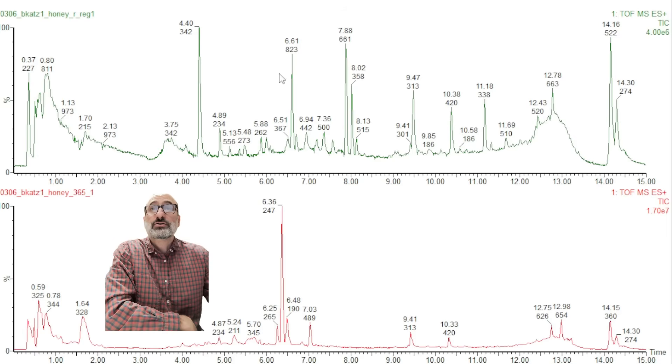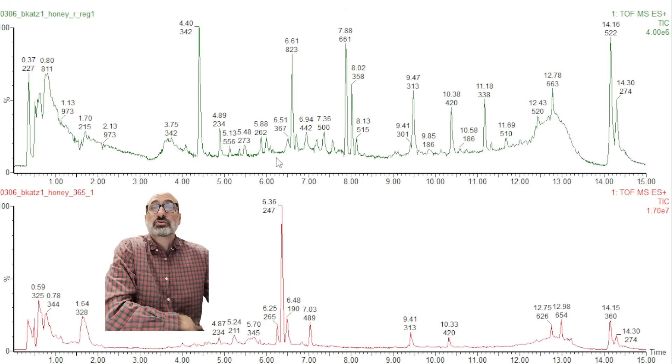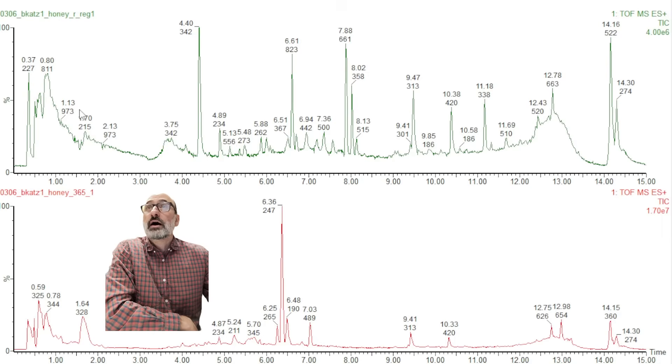First off, you're not seeing the 247 peak. And so I can't even confirm that this royal honey is honey. Like it could just be like sugar syrup of some sort. But then you can see that in this royal honey sample on top, there are a lot more individual peaks that we're not seeing down below.